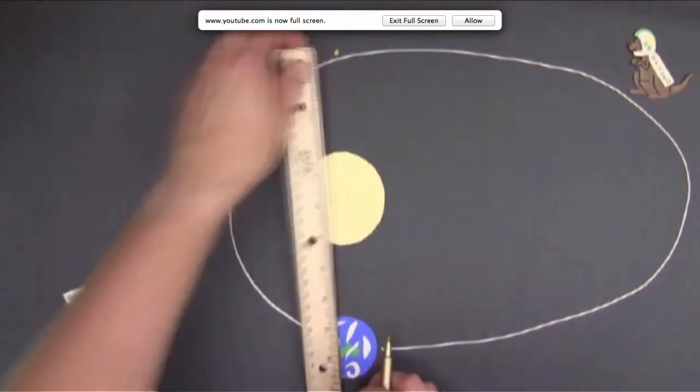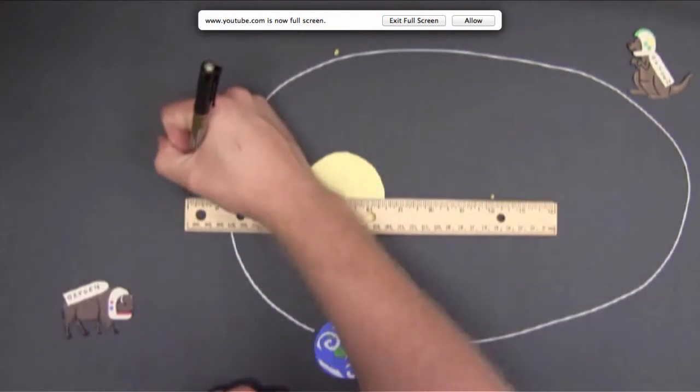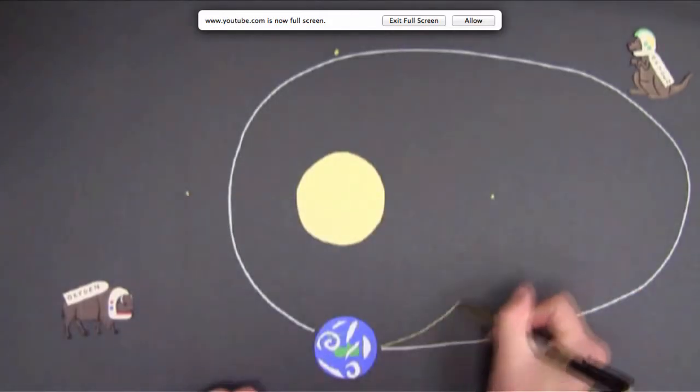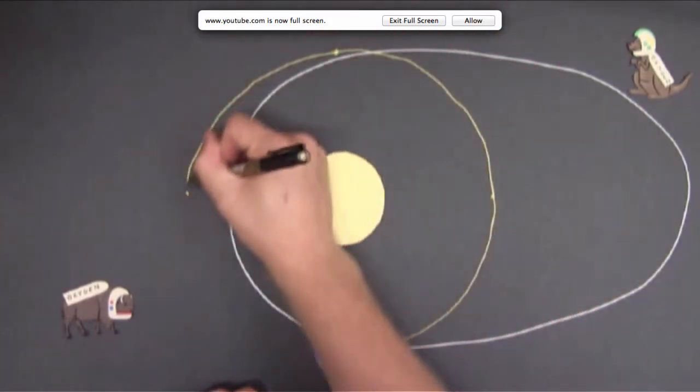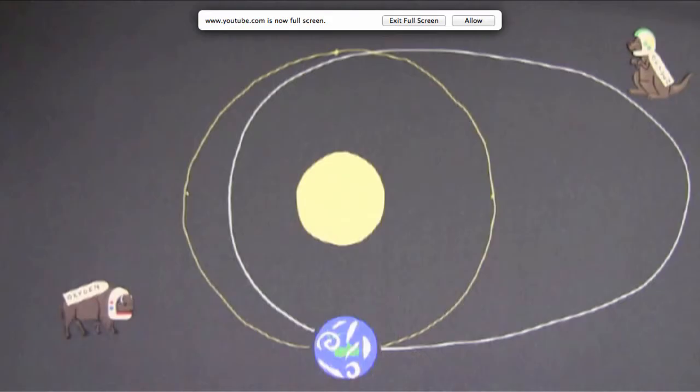In actuality, there's a relatively small difference between the earth's closest and furthest points from the sun. If we draw earth's orbit with the correct shape, it looks like this. You can see it's actually pretty circular, but it's not perfect. So it's not the closeness of the earth to the sun that causes the seasons.